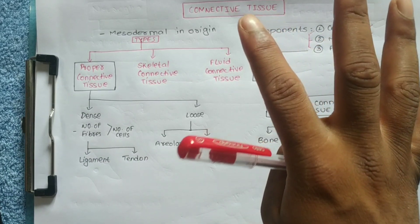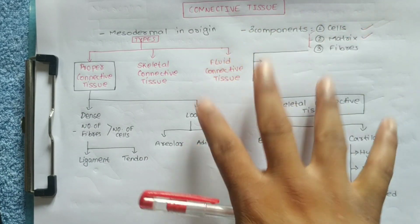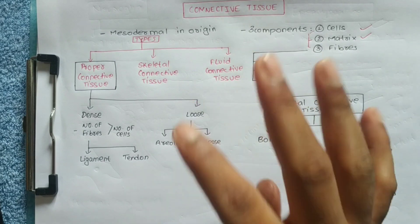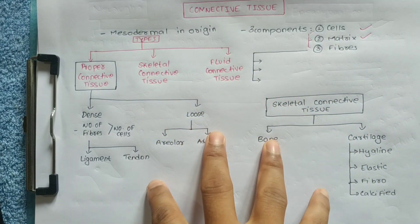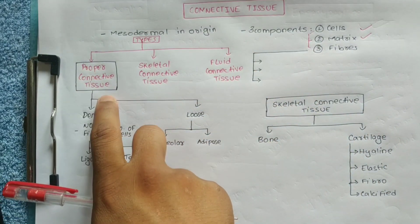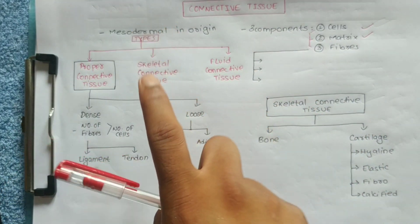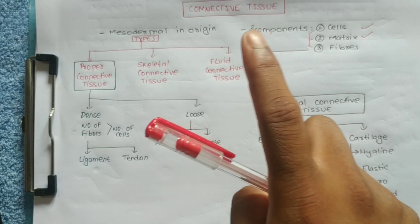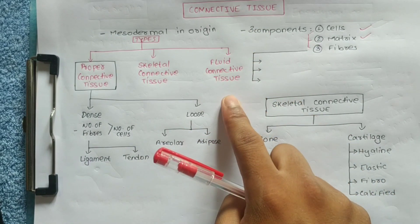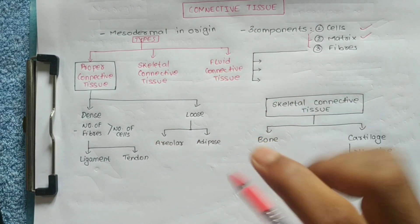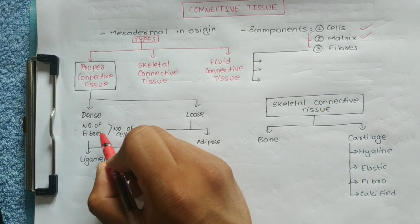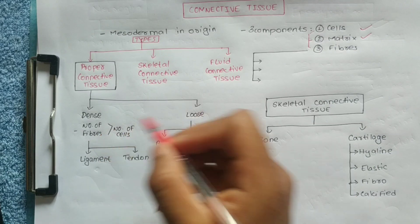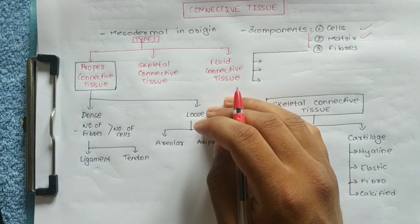There are three types of connective tissue: Proper Connective Tissue, Skeletal Connective Tissue, and Fluid Connective Tissue. Proper Connective Tissue has two types: Dense or Loose.